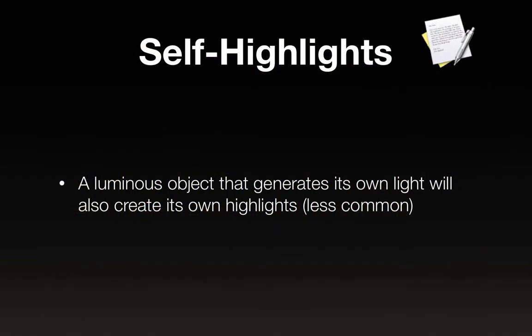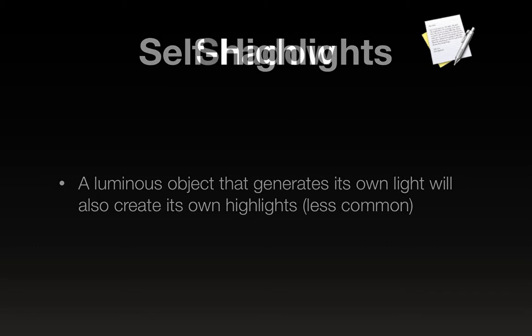A luminous object that generates its own light will also create its own highlights — that's referred to as self highlights. That situation is less common. You don't typically see that unless you're talking about light bulbs or the sun or something like that.